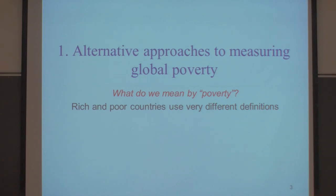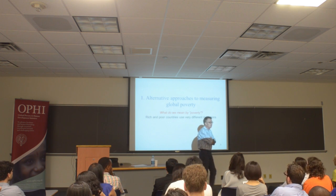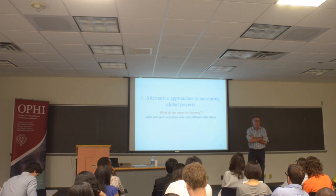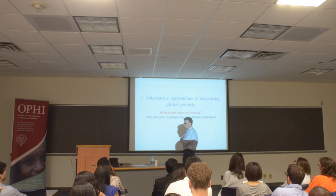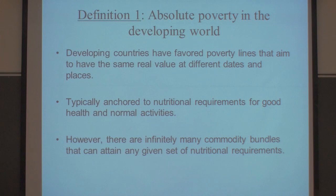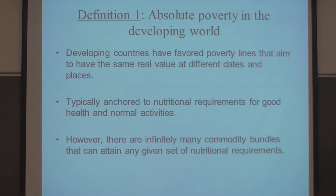What do we mean by poverty? When we look at definitions found across the world, they vary enormously. We see a very profound difference between how poverty is measured in the rich world versus the poor world. In poor and middle-income countries, poverty is typically — not invariably, but typically — measured in absolute terms. What we mean by that is a fixed real poverty line over time and across space. We judge two people at the same real standard of living the same way, no matter where they are.